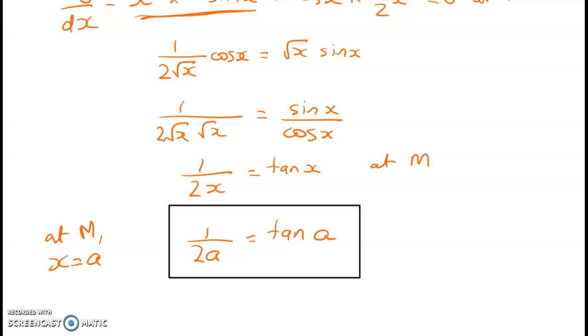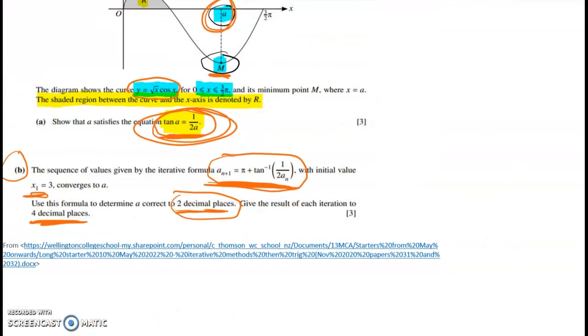But all we're doing is we're getting our first derivative, setting it to zero and rearranging. And then we're saying that there's a specific x value where that is true. And in this case we're told that that x value is a. So that's the first part done, and that was three marks.